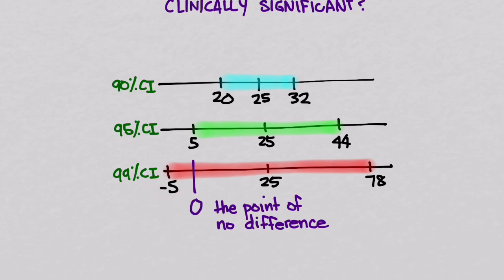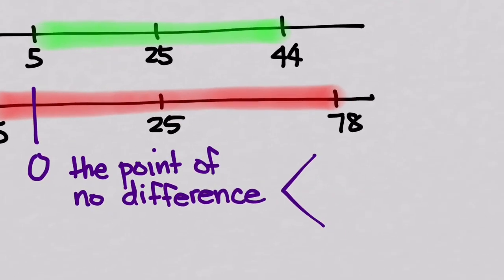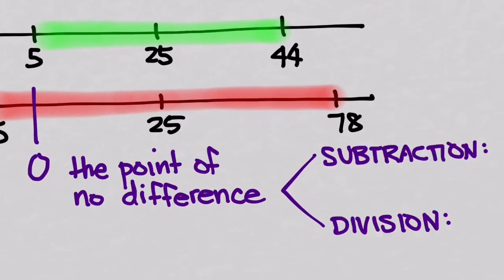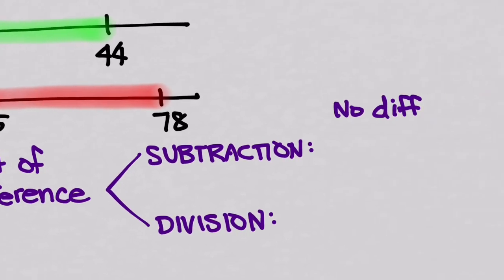Let's talk about the point of no difference a bit more. When comparing things, you're going to use two different methods: subtraction and division. When you subtract two things that are the same, you get 0 — that's when there's no difference. When you divide two things that are the same, the same divided by the same, you get 1.